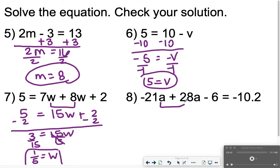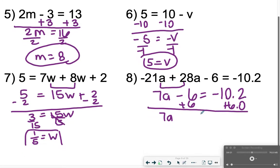Number 8, I also need to combine like terms at first. So negative 21a plus 28a, that's going to give me 7a minus 6 is equal to negative 10.2. And then I'm going to add 6 to both sides, being very careful, lining up my decimals. Remember, you can use a calculator for this quiz. 7a is equal to negative 10.2 plus 6, that is negative 4.2. And then I'm going to divide both sides by 7 to get a is equal to negative 0.6.